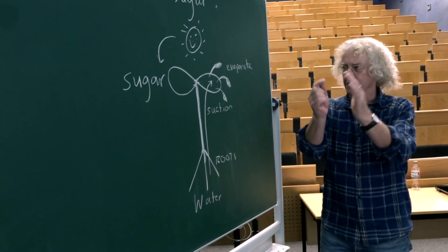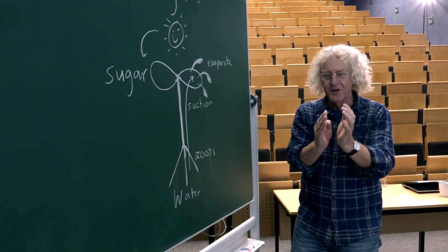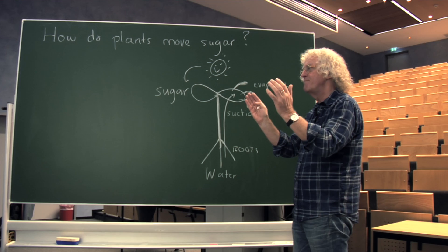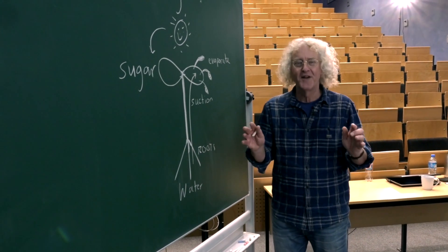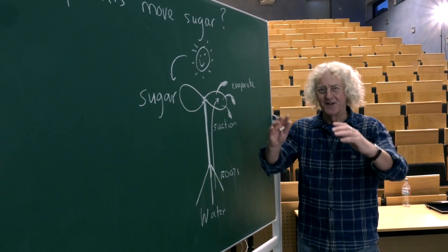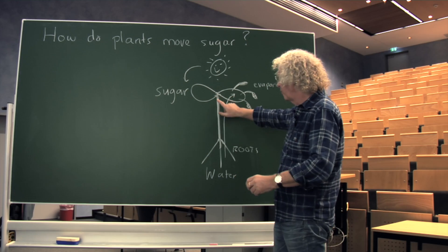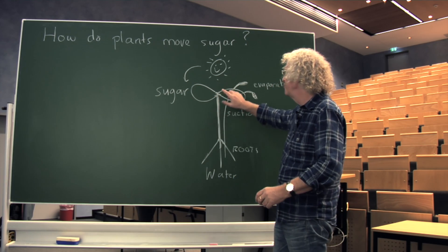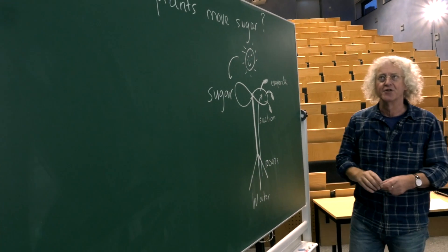The phloem has a very strong cell wall and so when the water is pulled in a high pressure develops. This pressure is more than in the tires of your mountain bike. This pressure pushes a concentrated sugar solution all the way through the plant, down to the roots, into the stem, also up into younger leaves, into potatoes or grains.